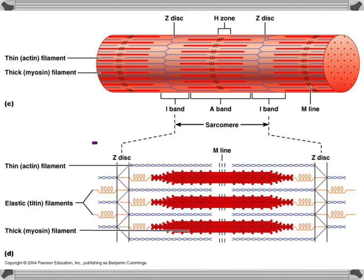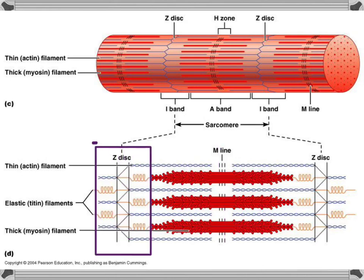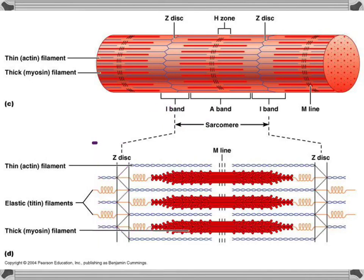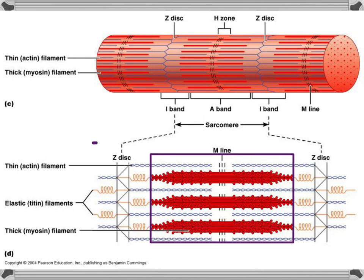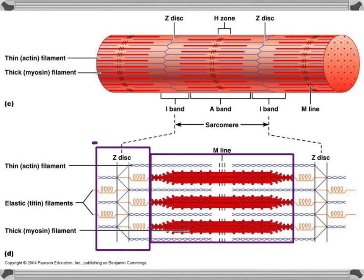Within the H-zone is a line called the M-line, and M literally means the middle of the sarcomere. The areas made up of only thin filaments on either side are your I-bands. This pattern of A-bands and I-bands is what creates striations. Because the A-band contains thick and thin filaments, it appears as the dark band. The I-band, made up of only thin filaments, has a lighter color. So you have light, dark, light — this is what creates the stripes or striations in skeletal muscle.